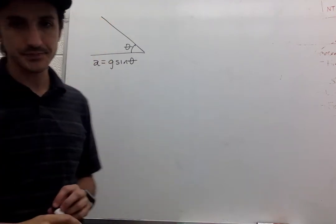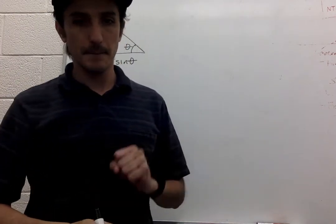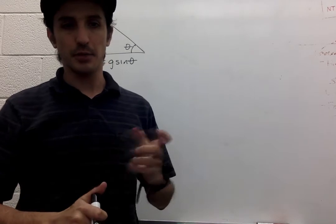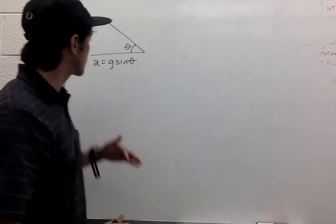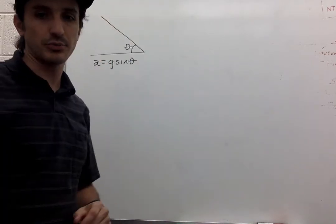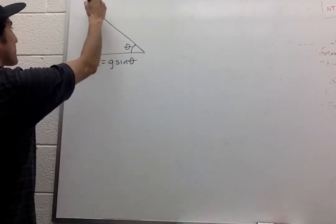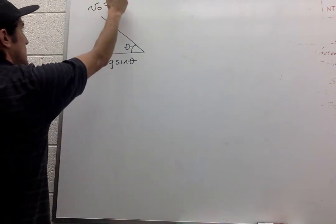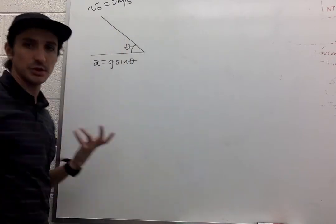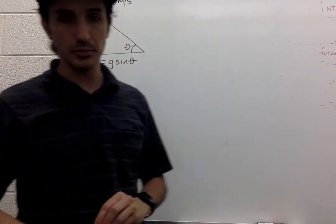There's a person on a bike that is going to go down this ramp starting from rest. So the initial velocity, the initial speed is 0 meters per second.